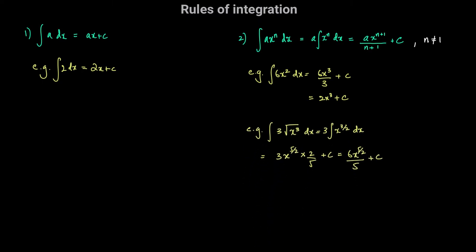Here's another example. We have to integrate 3 times the square root of x cubed with respect to x. Here 3 is a constant coefficient so we factor it out, and x cubed under a root is simply x to the power of 3 over 2. Integrating x to the power of 3 over 2, we increase the power by 1: 3 over 2 plus 1 is 5 over 2, and we divide by the new power 5 over 2 — which is the same as multiplying by 2 over 5 — plus c. Our integral is 6x to the power of 5 over 2 divided by 5, plus c.